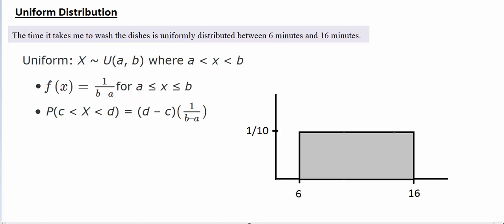In a previous video, we took a look at the uniform distribution and an example discussing washing dishes. Here's the example again: the time it takes me to wash the dishes is uniformly distributed between 6 and 16 minutes. So we drew the distribution here. Since it's uniformly distributed, it ends up looking like a box.